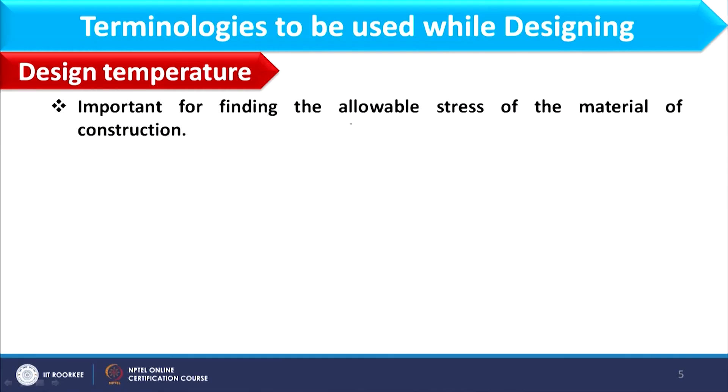Next is design temperature. Design temperature is required to find the allowable stress of the material of construction. Allowable stress varies with temperature; therefore, it is important to first determine the design temperature and then obtain the allowable stress value based on that.